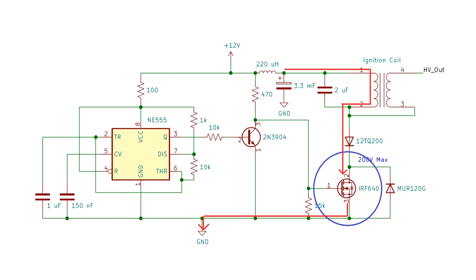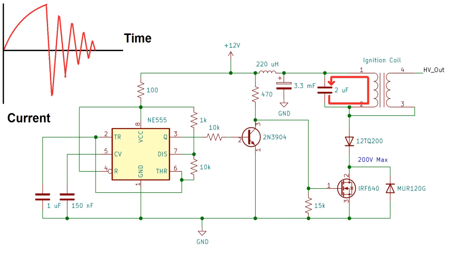Now, the current across the MOSFET resembles this sawtooth pattern, but that's not the case for the LC tank formed by the capacitor in the primary coil. When the MOSFET is shut off, the LC tank current oscillates back and forth at its resonant frequency.